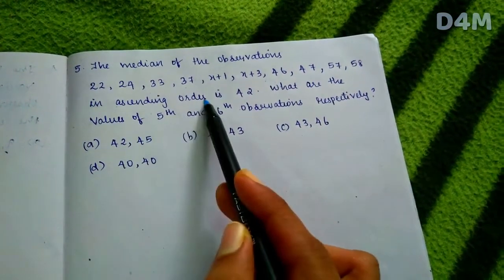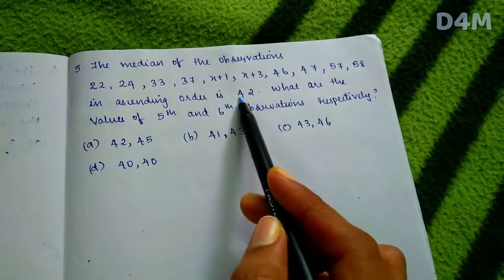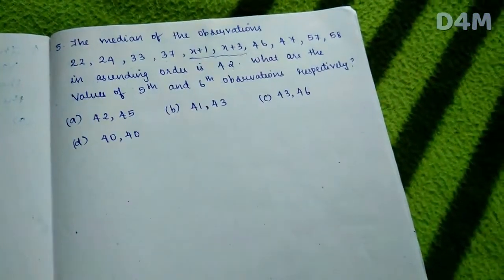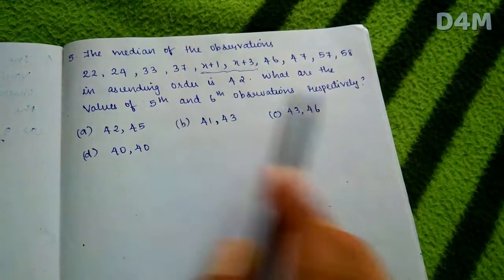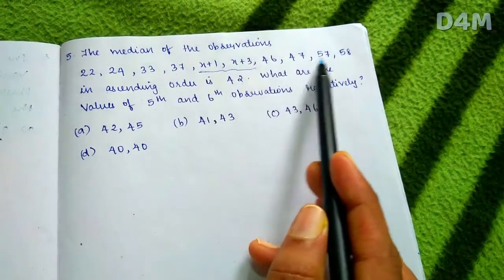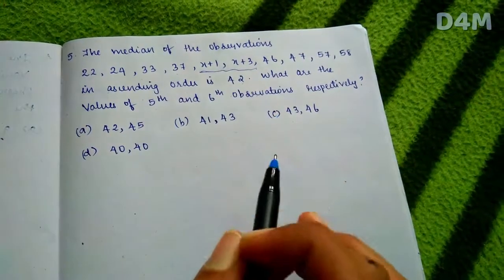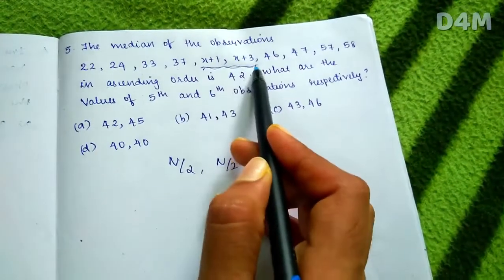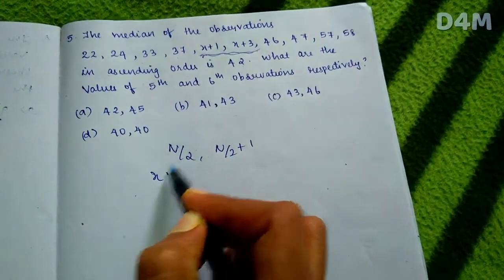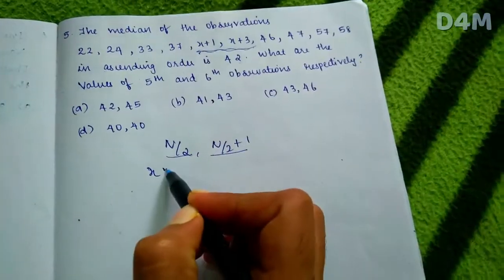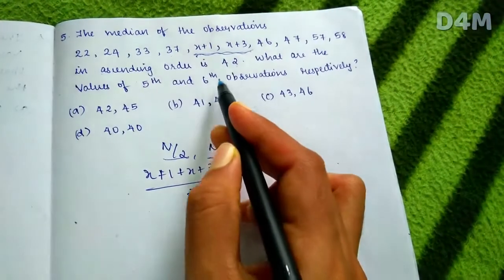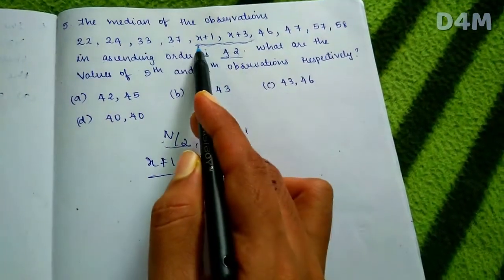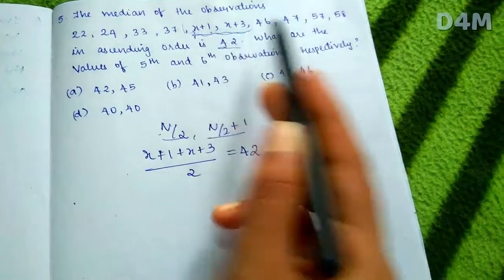Next question: The median of the observations is 42. What are the values of the fifth and sixth observations, given they are x+1 and x+3? There are 10 terms. For even n, the median is the average of the n/2 th and (n/2 + 1)th terms. So the median equals (x+1 + x+3)/2 = 42.